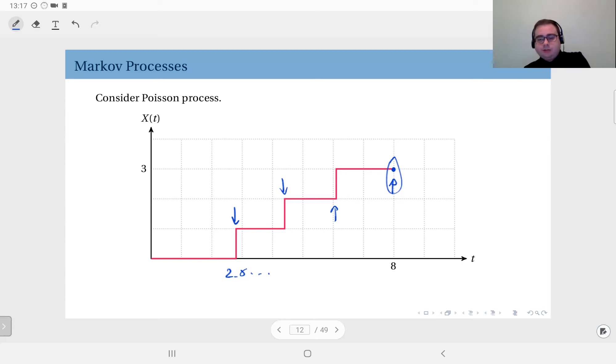Because you see the inter-arrivals are exponential if you remember the Poisson process, so the residual time of the next arrival after eight is also an exponential random variable. So after some exponential random time another event will occur and the process will become four. But that behavior depends on this information only. If you know at time eight the process equals three, you can estimate or you can write the distribution of this process at any time after eight. How it got to three at eight is irrelevant.